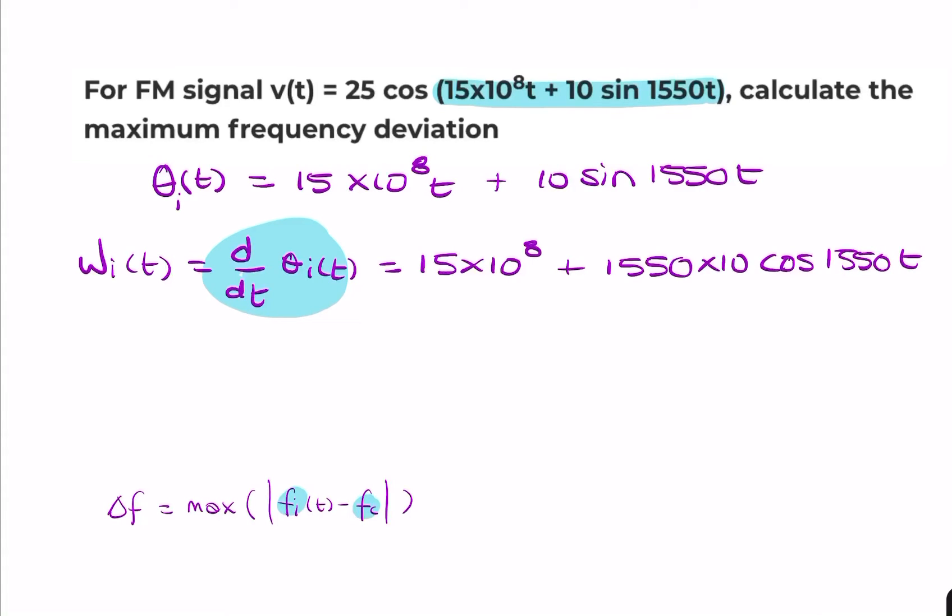And if we wanted to find the instantaneous frequency in hertz, rather than radians per second, then we would take that and divide it by 2π. So it would be 15 times 10 to the power of 8 over 2π, plus 1550 over 2π cosine 1550t.